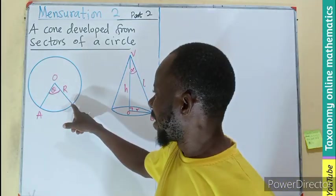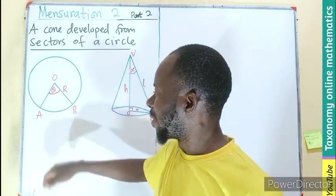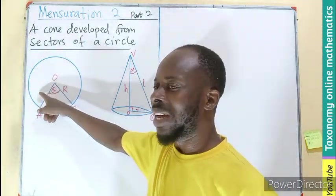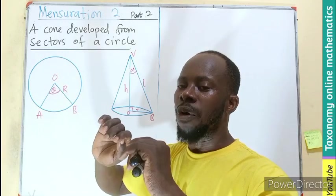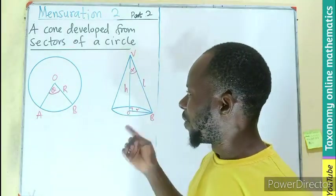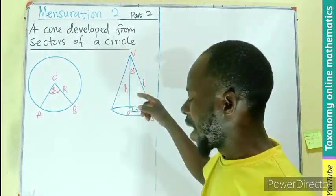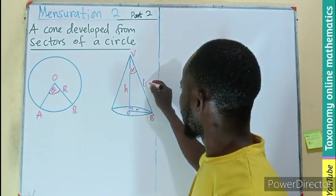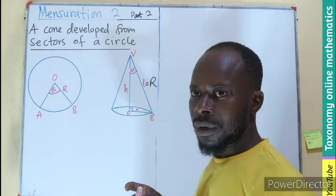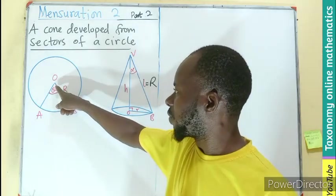The major arc will also form a major sector. If this is removed, this becomes a major sector that could also be folded to form the same cone. In forming that, the radius of the cone becomes the slant height. So the slant height and the radius is going to be the same because it is formed from here.